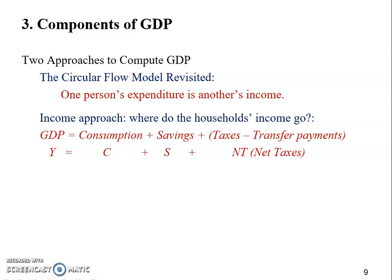Here we use letters for each component: Y stands for GDP, or national income or output; C stands for consumption; S is savings; and T means net taxes. The second approach is the expenditure approach, which focuses on where all firms' products go.